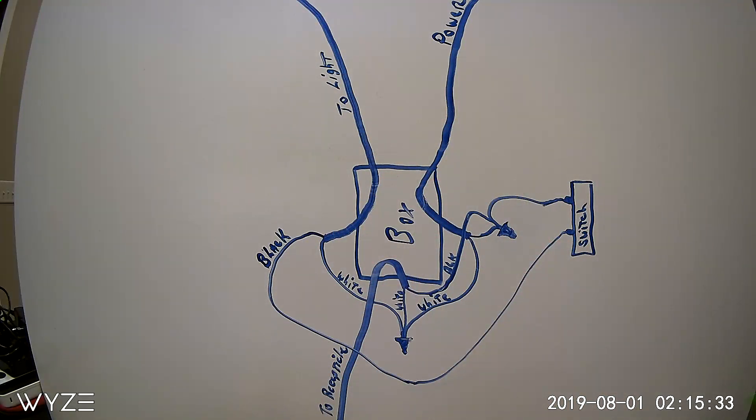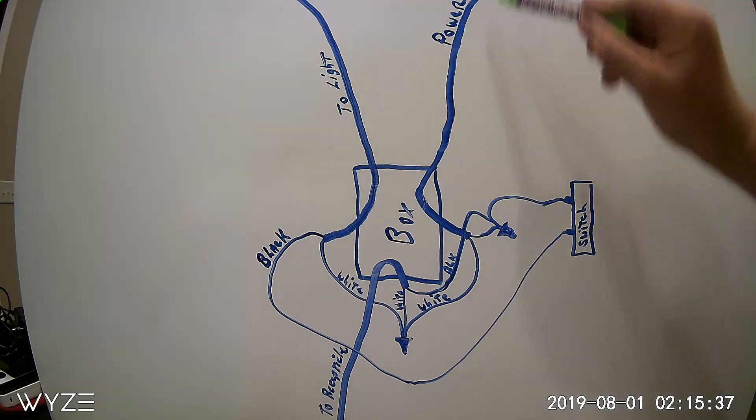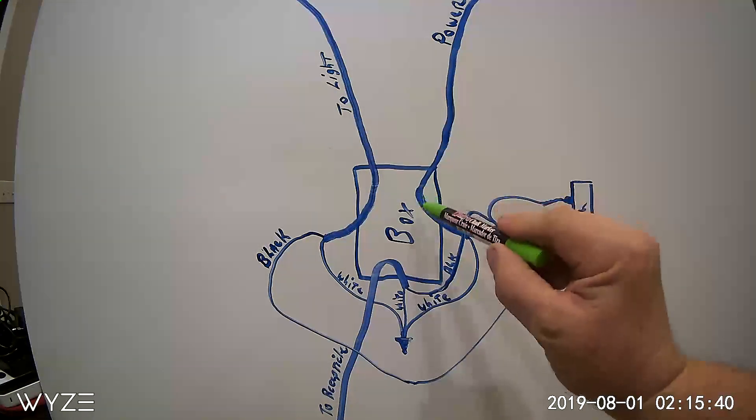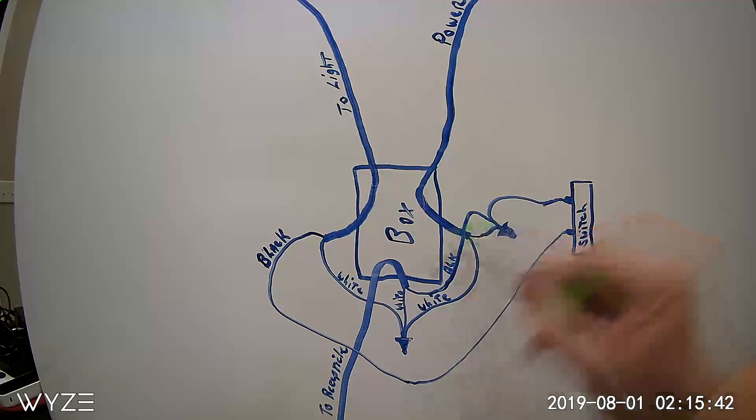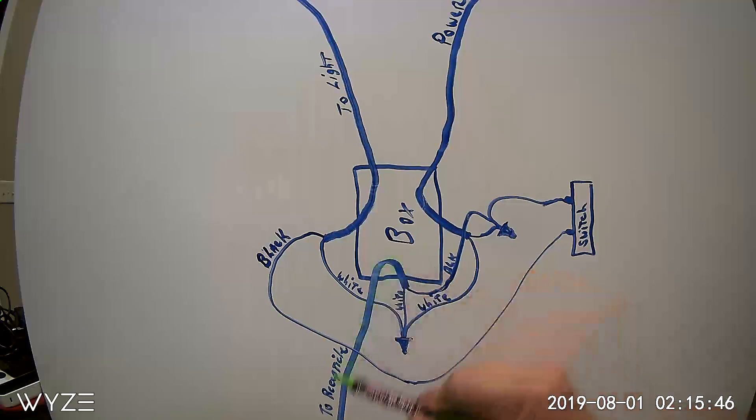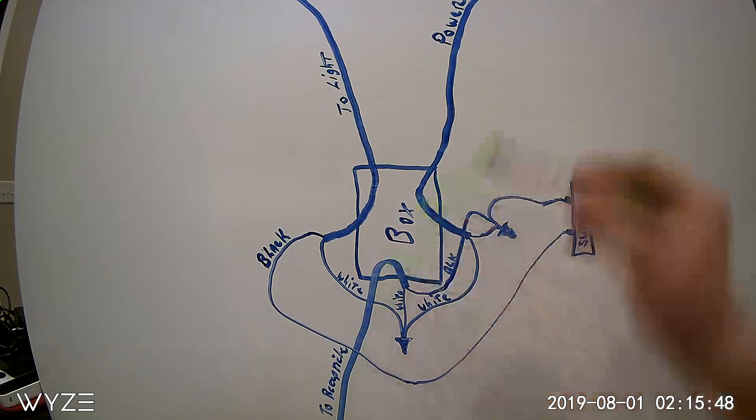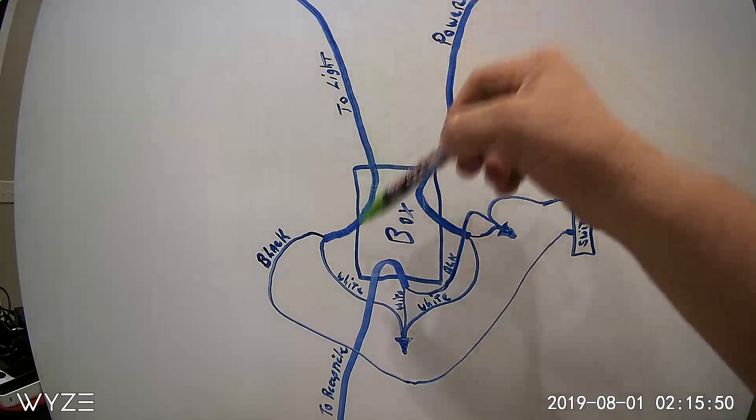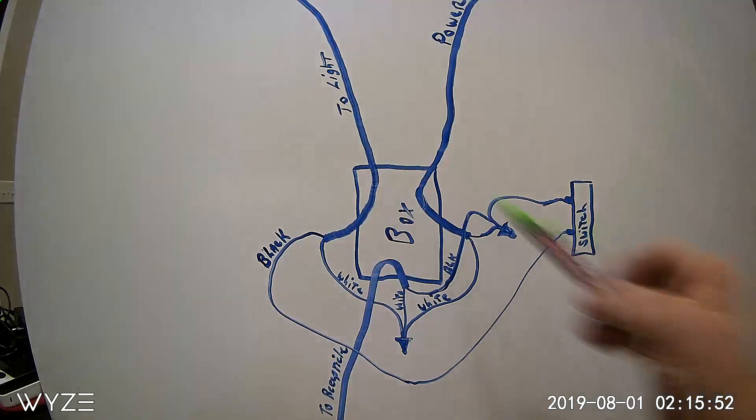If you look at the board here, this is pretty much a typical setup of a light switch box. You have a power wire that comes into your box and you also have another wire that comes out of it that goes to a receptacle, and then a third wire that goes to the light fixture.